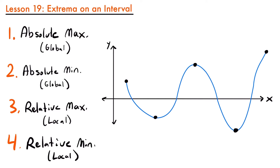We've got an absolute maximum, which is sometimes called a global maximum, and that is going to be the highest point on your function, or the highest point on an interval for a function — referring to the y-value of that point. So if you can find a point that has the largest y-value out of any other points, that would be your absolute maximum.